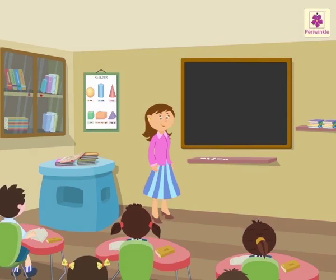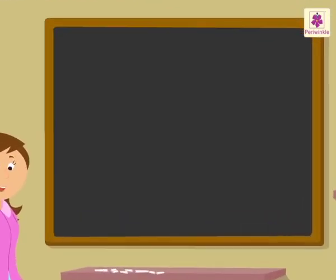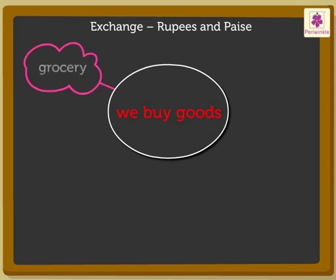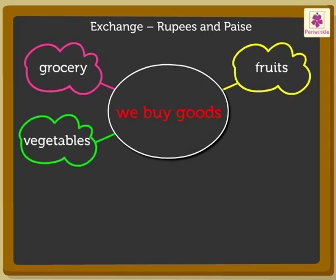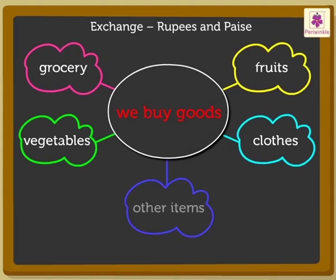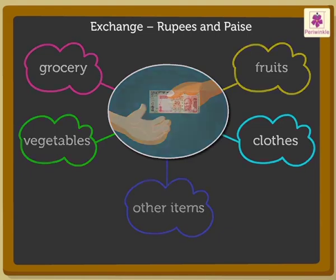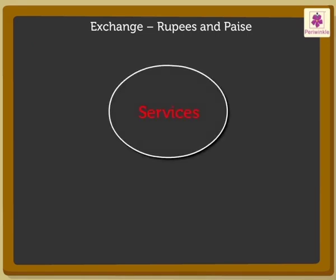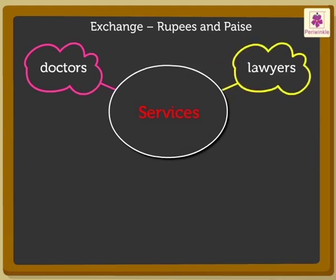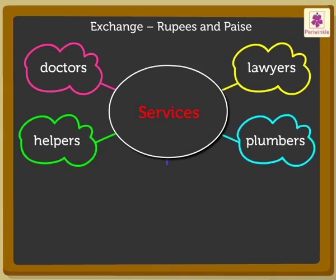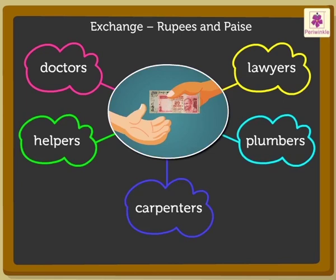Hello kids! We all know that we buy goods like grocery, fruits, vegetables, clothes and other items in exchange of money. We use the services of people like doctors, lawyers, helpers, plumbers, and carpenters in exchange of money.